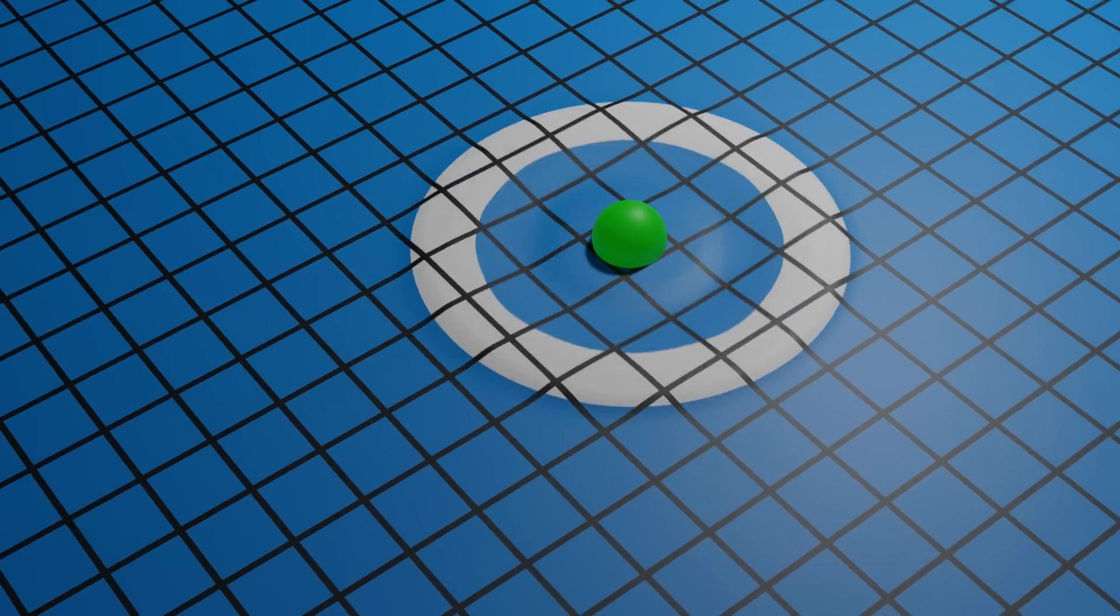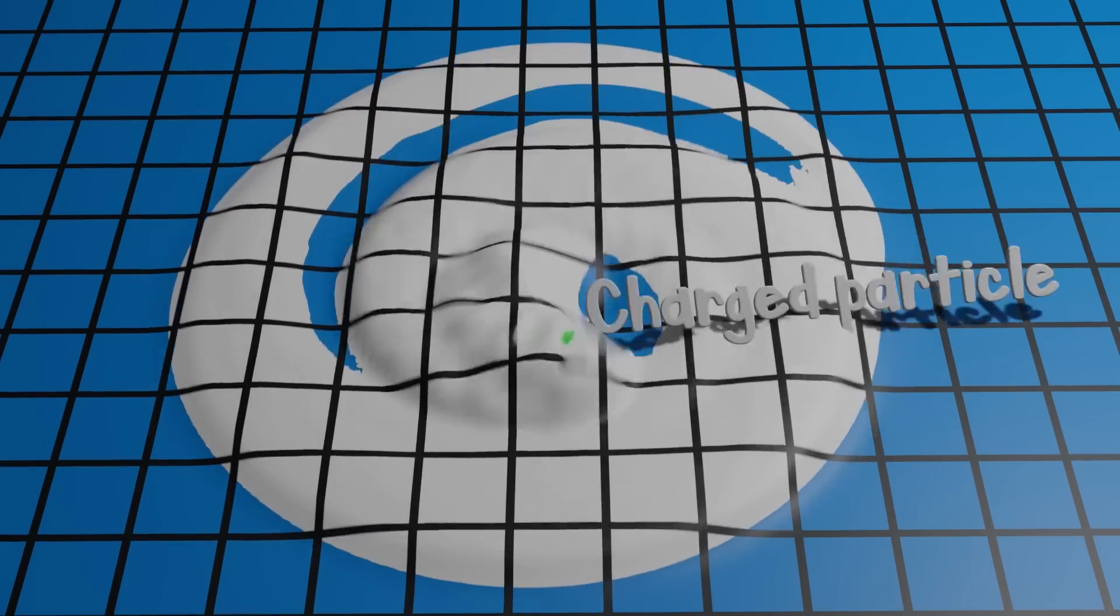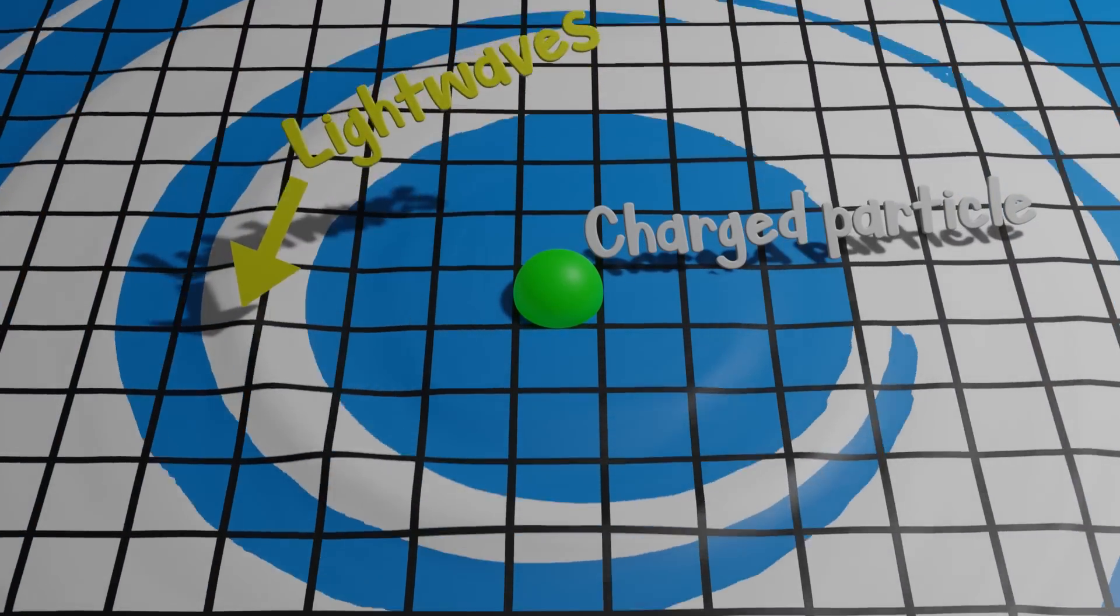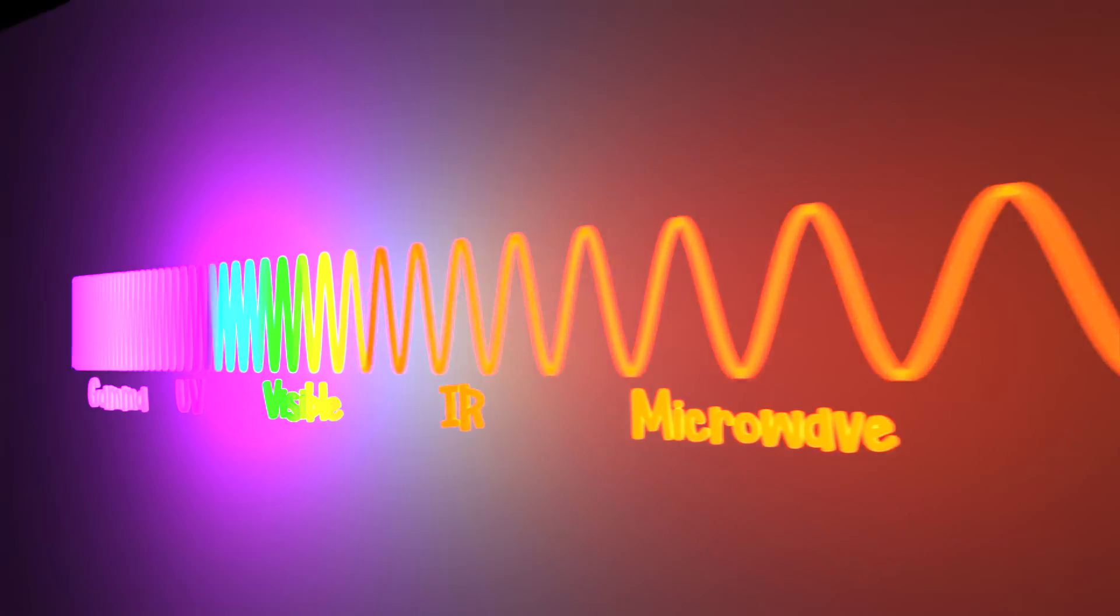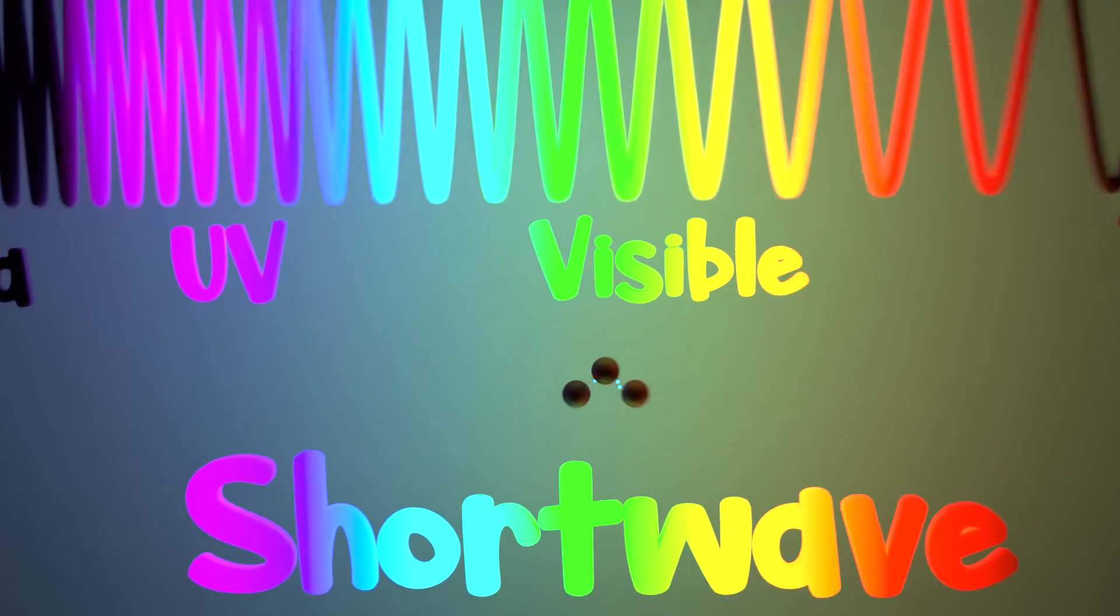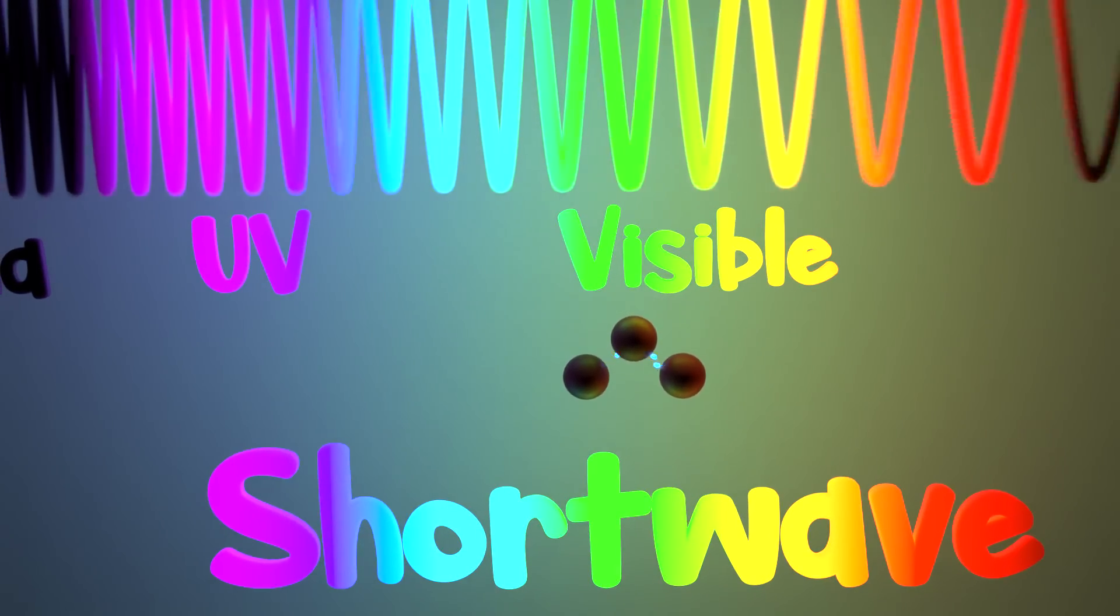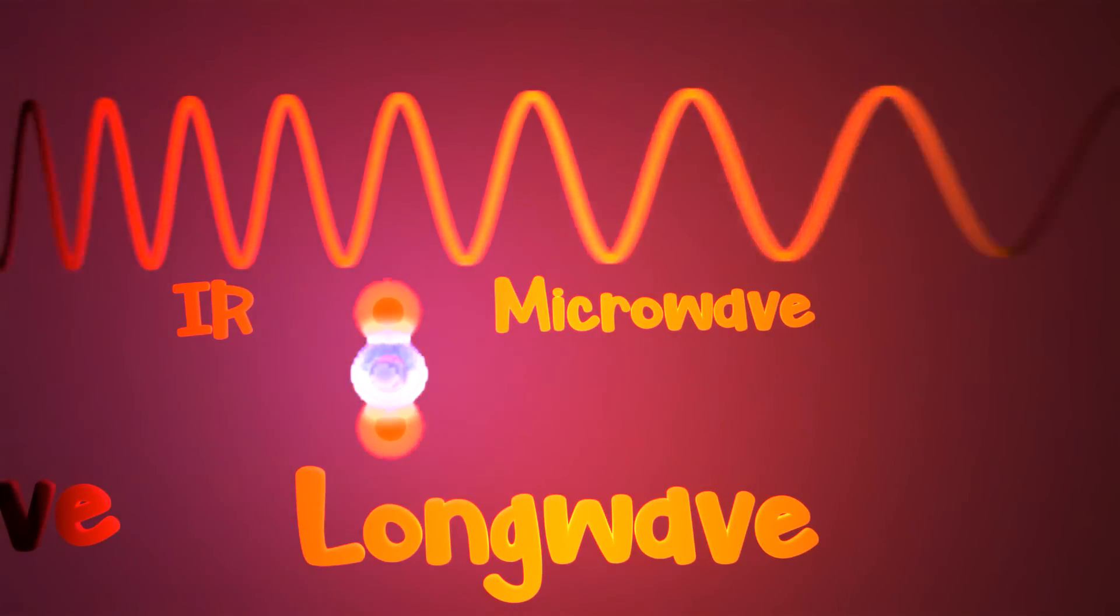Light is a property of oscillating charges. Whenever charged particles wiggle, they produce light. The inverse is also possible, and light can wiggle charged particles. Visible, ultraviolet, or what we call shortwave radiation, primarily wiggles the fast-moving electrons in the bonds of molecules and atoms. Infrared, microwave, or what we call longwave radiation, wiggles entire molecules.